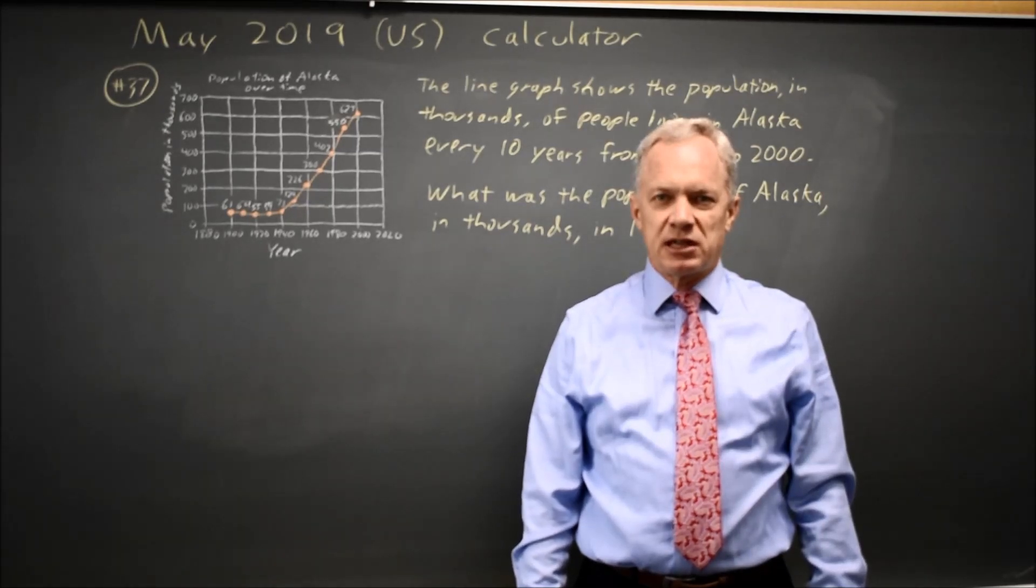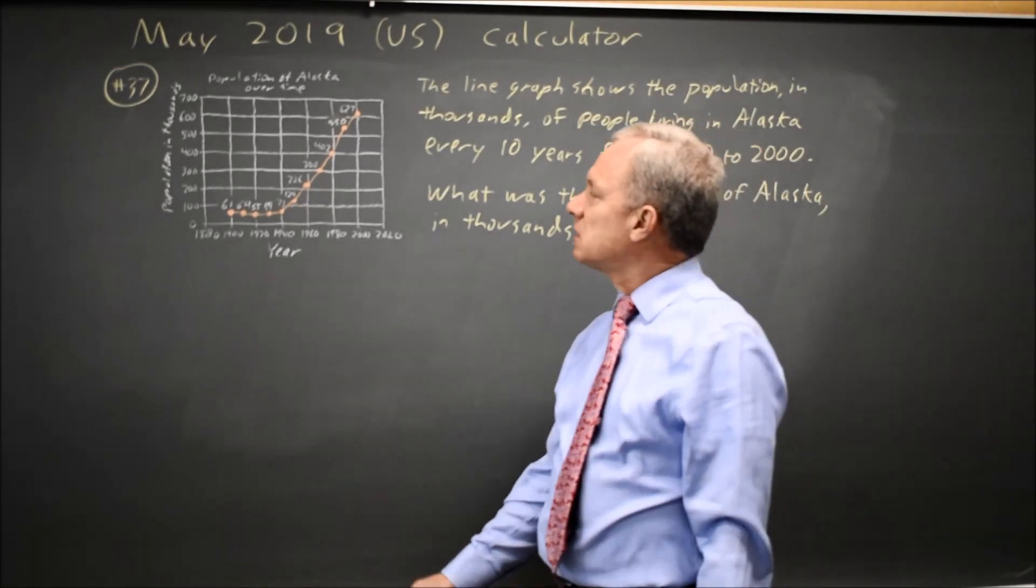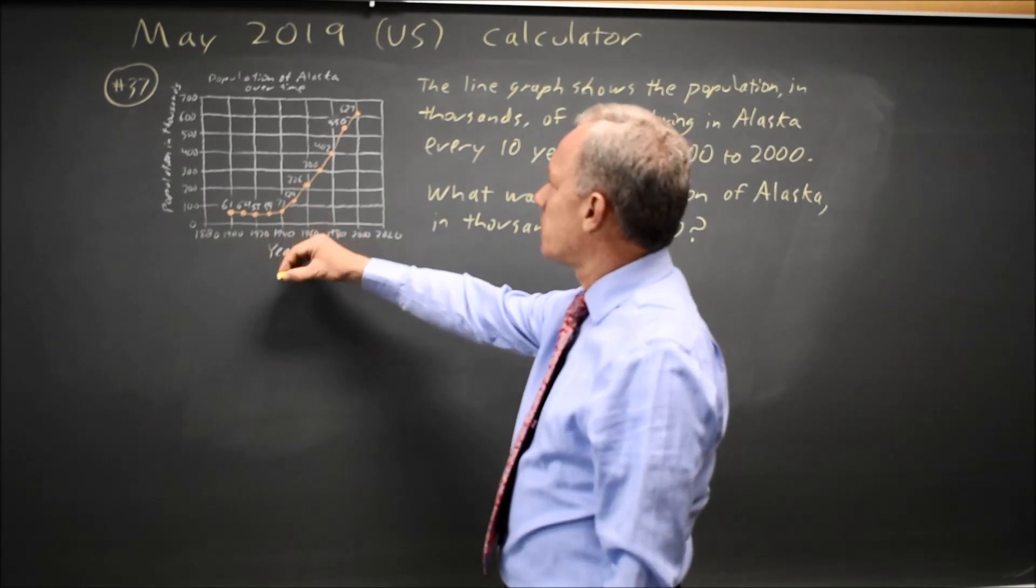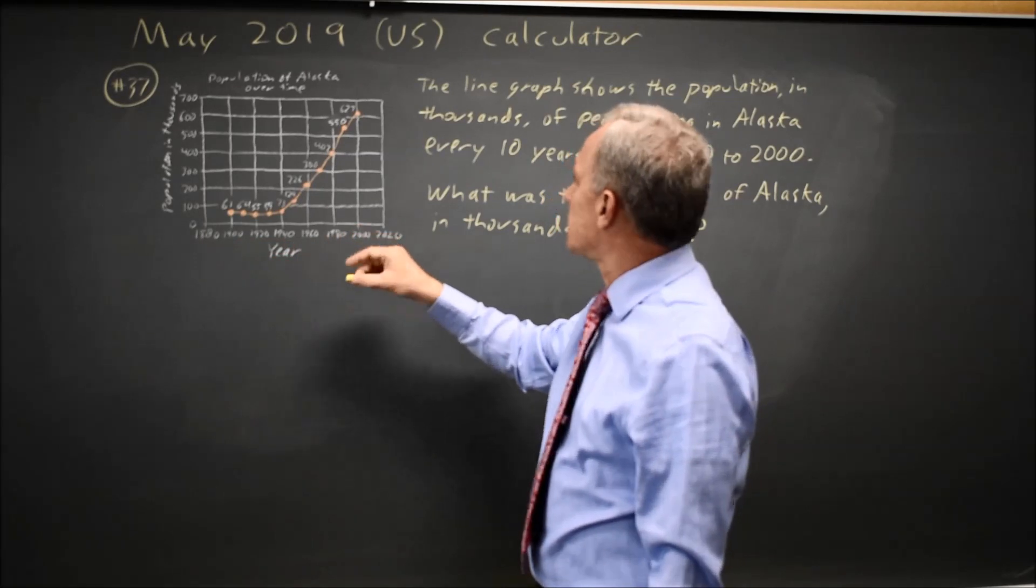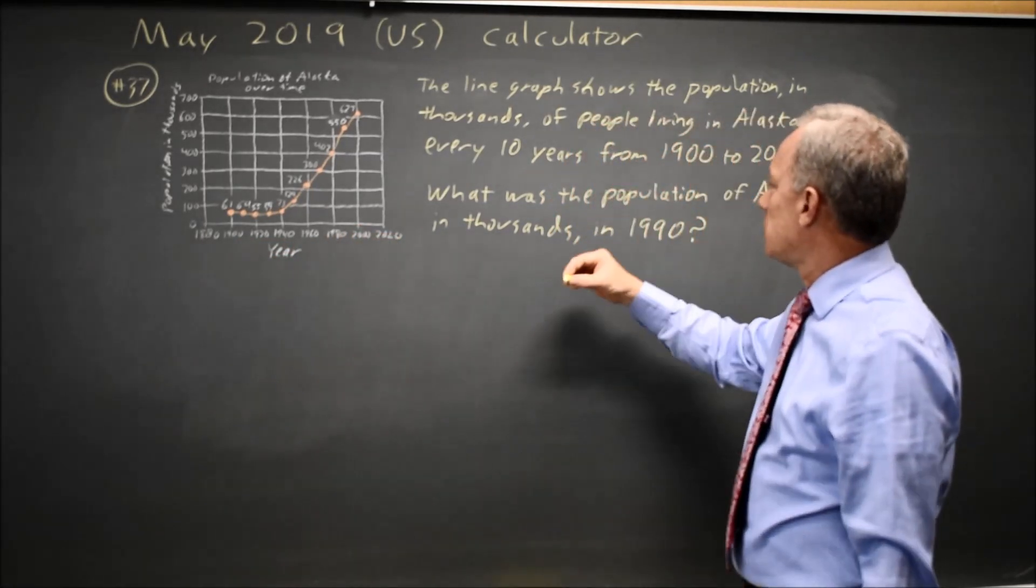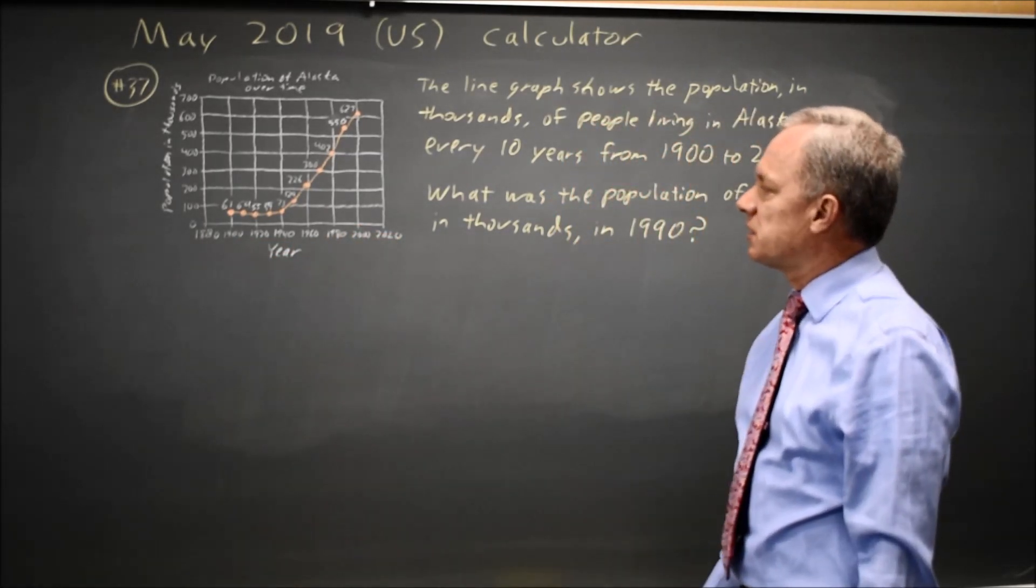This is calculator question number 37. College Board gives us a graph that shows the population of Alaska in thousands every ten years from 1990 to 2000, and their question is what was the population of Alaska in thousands in 1990.